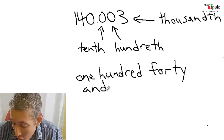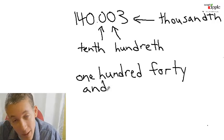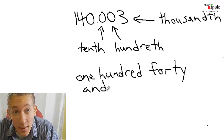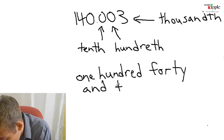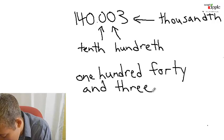So you can skip the zero tenths, you can skip the zero hundredths, and go straight to the thousandths place. So it would be 140 and three thousandths.